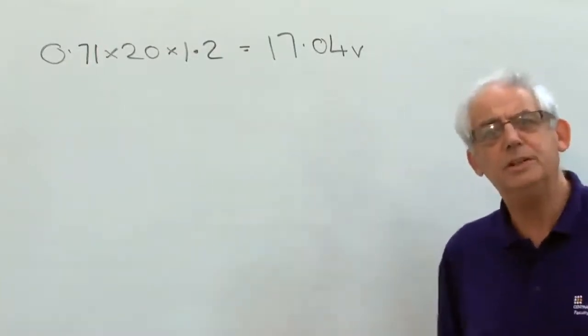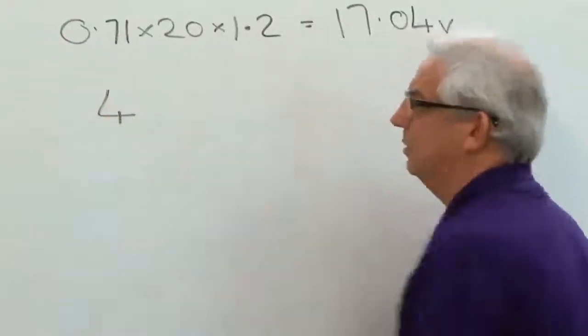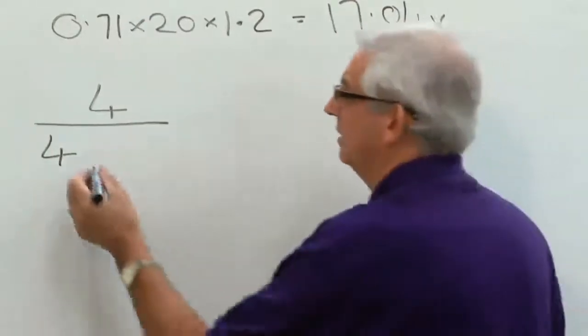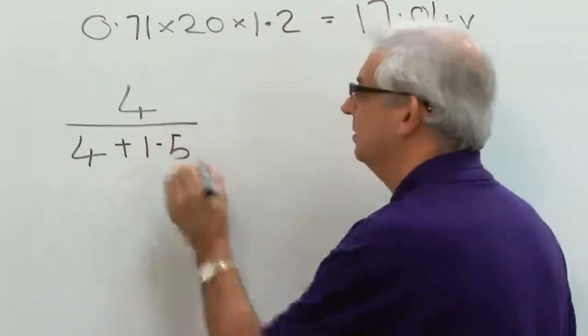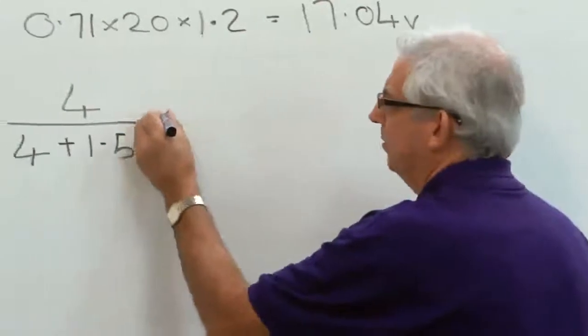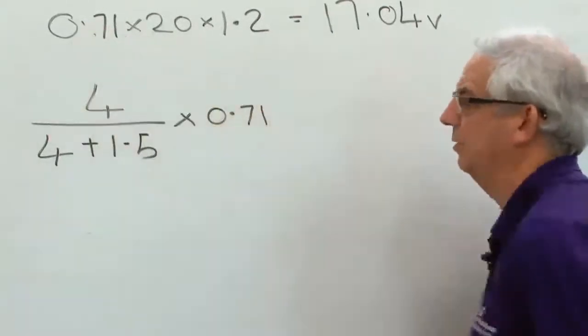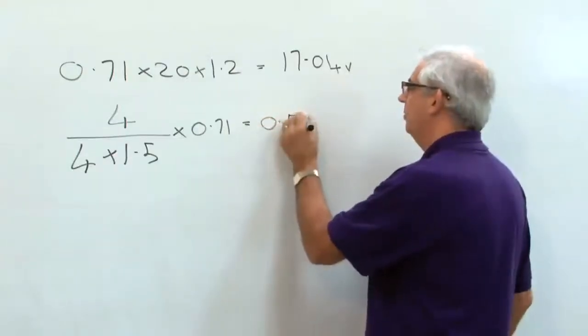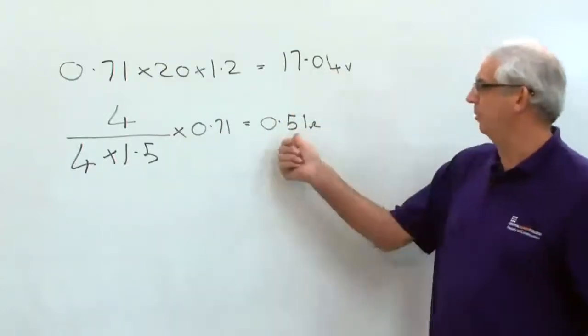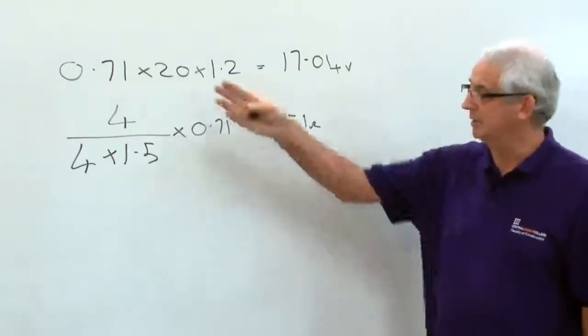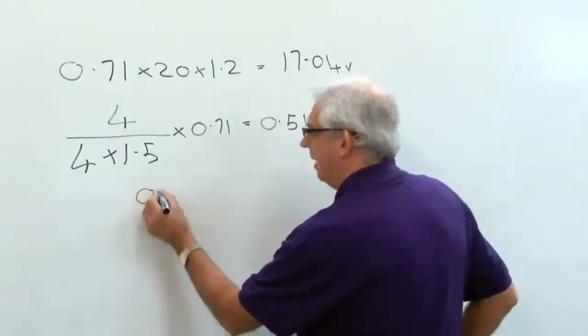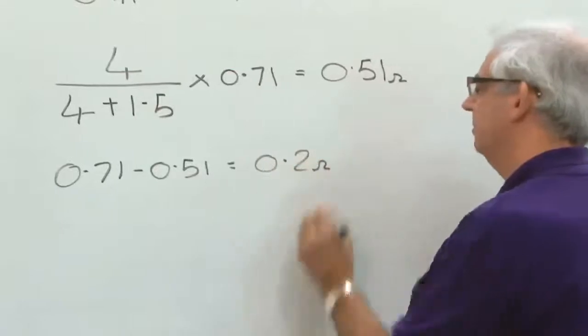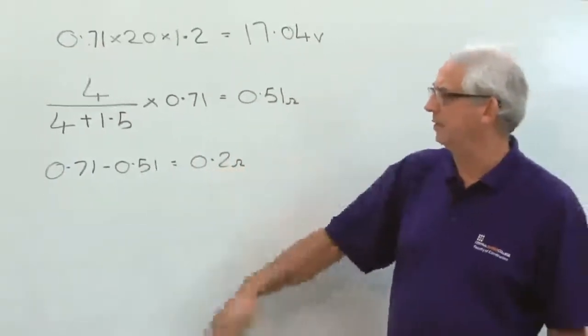It's quite a simple calculation. All I need to do is to divide the cross-sectional area of the live conductor or line conductor by the cross-sectional area of the line conductor plus the cross-sectional area of the CPC. I then need to multiply it by my R1 and R2 value, which I've got there. That's going to come out at around 0.51 ohms. This 0.51 ohms is the resistance of my CPC in this circuit. If I have an R1 and R2 of 0.71 and I take away 0.51, it gives me a resistance value of 0.2. 0.2 will be the resistance value of my line conductor.